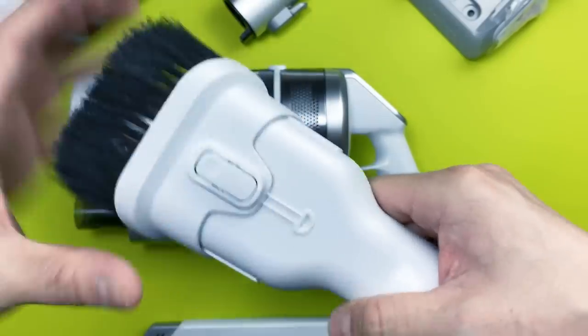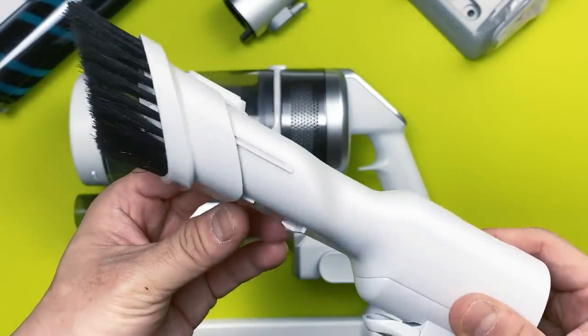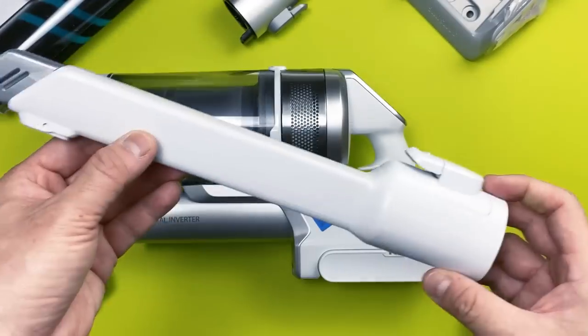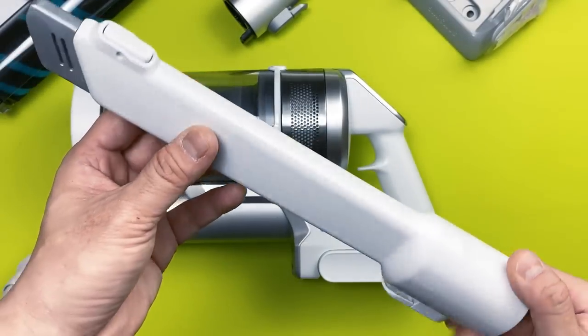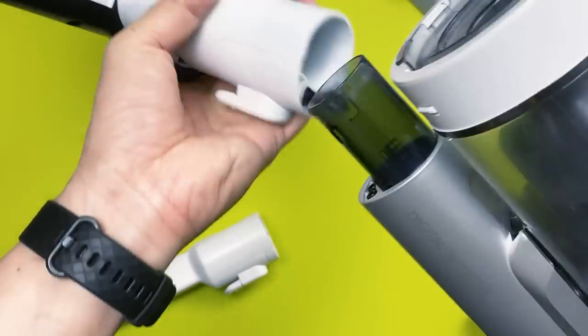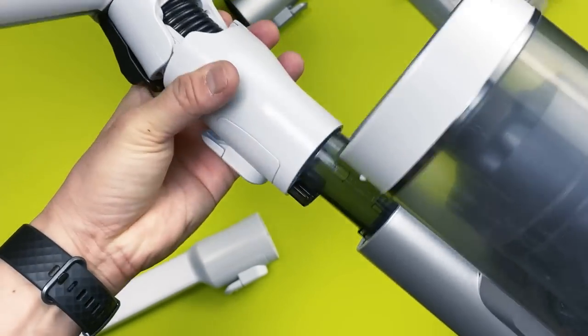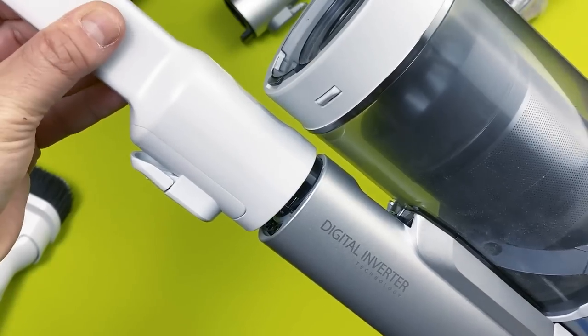As you've seen earlier in the video, the JET70 comes with various accessories, including the combination tool, crevice extension tool, and the soft action brush. They're solidly built and robust, and are super easy to attach to the handheld body.